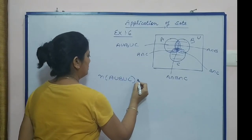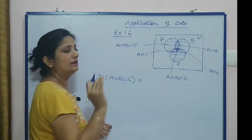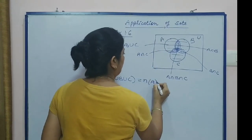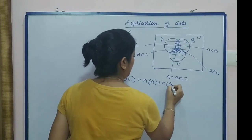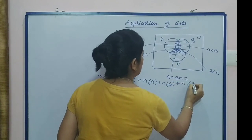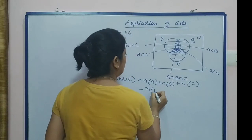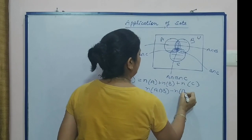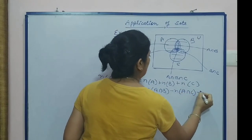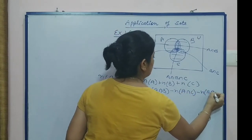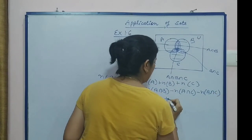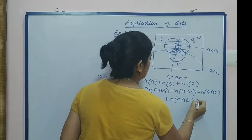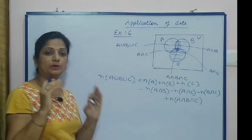To calculate number of A union B union C — the union of all three sets — the formula is: number of A plus number of B plus number of C, minus number of A intersection B, minus number of A intersection C, minus number of B intersection C, then plus number of A intersection B intersection C. This is the formula to use for 3 sets.